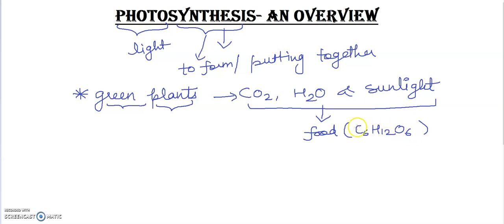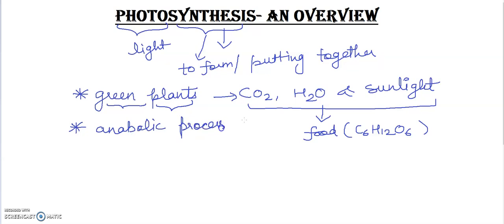One thing I want to tell you: photosynthesis is an anabolic process. Anabolic means to synthesize something or to prepare something — anabolic means building. Here we are building something, which is why photosynthesis comes under an anabolic process.